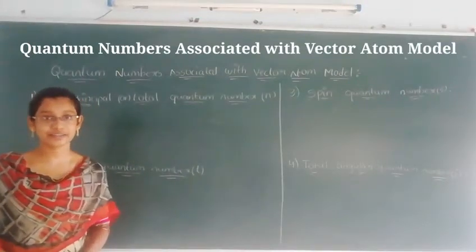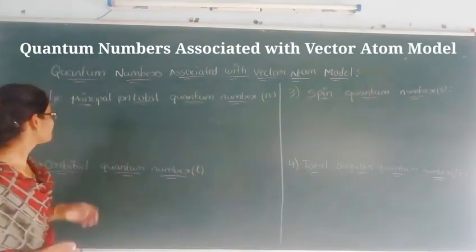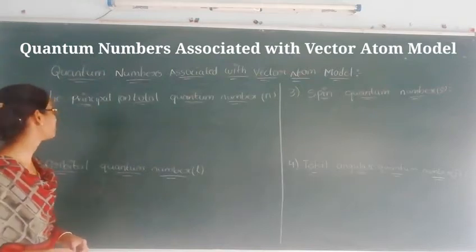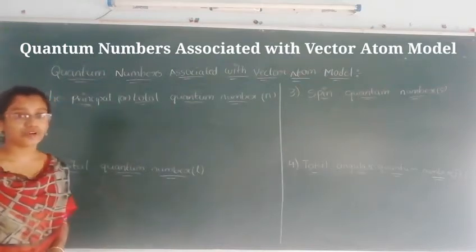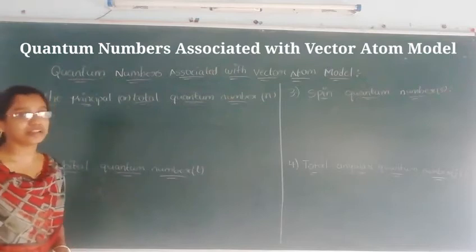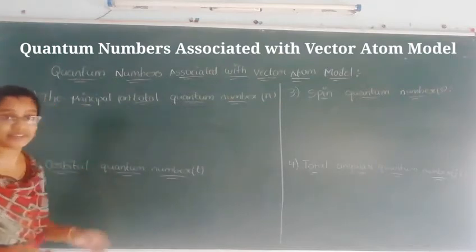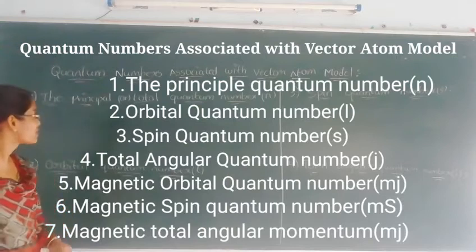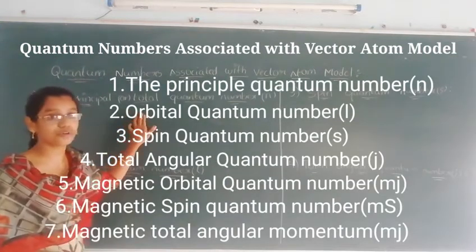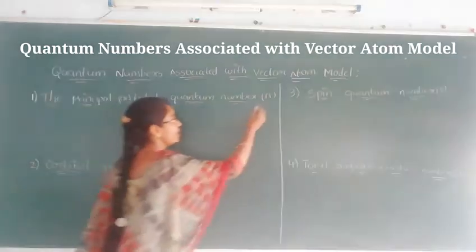Hello everyone, this is Prashuna and today our topic is quantum numbers associated with vector atom model. We will explain quantum numbers using the vector atom model. There are 7 quantum numbers, and the first quantum number is the principal quantum number, or total quantum number, which is denoted with n.